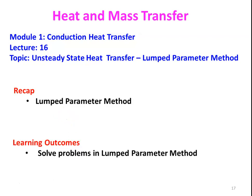The lumped parameter method is applicable only when the Biot number is less than 0.1, where we assume the material has very high thermal conductivity. The temperature within the solid is a function of only time, and with respect to position it is constant. When thermal conductivity is very high, resistance for conduction heat transfer is negligible, giving uniform temperature everywhere within the solid. In this lecture, we are going to solve a few more additional problems on the lumped parameter method.